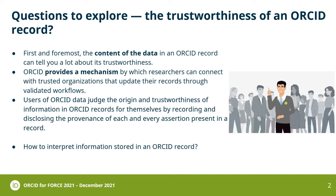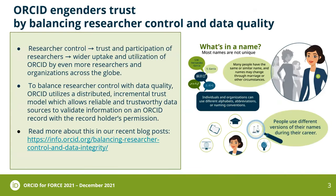Users of ORCID data judge the origin and trustworthiness of information in ORCID records by recording and disclosing the provenance of each and every assertion. The fundamental question will be how to interpret information stored in the ORCID record. ORCID engenders trust by balancing research culture and data quality. Most names are not unique and are quite ambiguous — both individuals and organizations can use different names during their careers. The central principle at ORCID is researcher control, meaning trust and participation from researchers, helping ORCID get wider uptake and globalization.